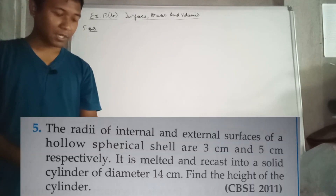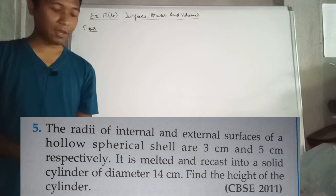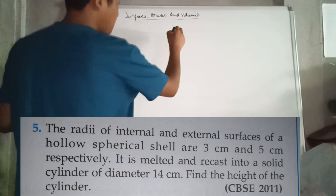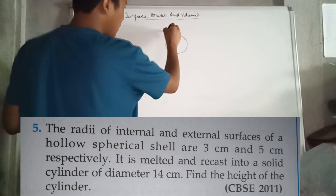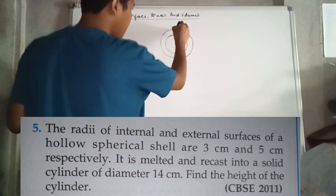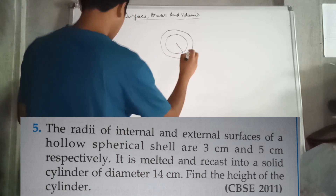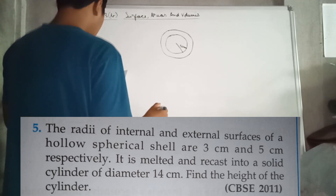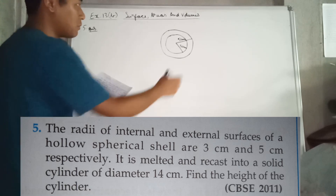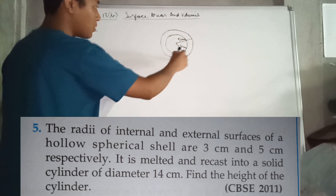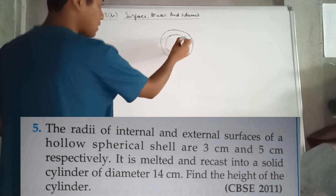Question number 5: The radii of internal and external surfaces of a hollow spherical shell are 3 cm and 5 cm respectively. This is the spherical shell with an inner circle and outer circle shown. Inner radius is 3 cm and outer radius is 5 cm.